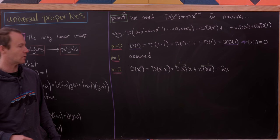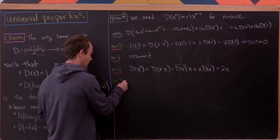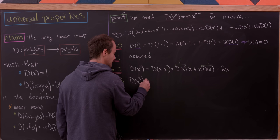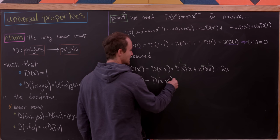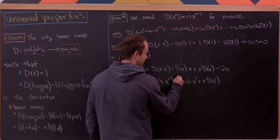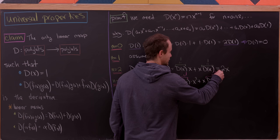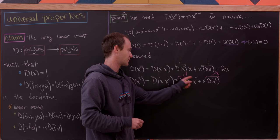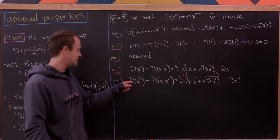For n = 3: d(x³) = d(x·x²). Applying the Leibniz rule: d(x)·x² + x·d(x²). We know d(x) = 1 and d(x²) = 2x from the previous step. So this becomes x² + x·2x = x² + 2x² = 3x². The power rule holds for x³.